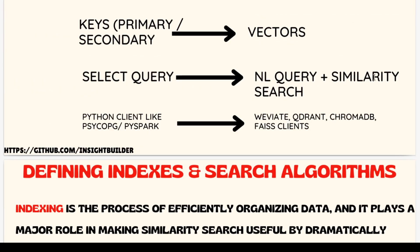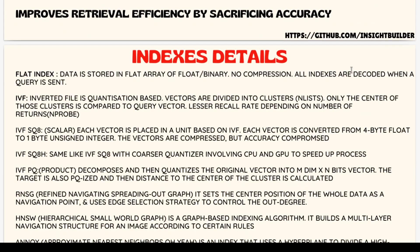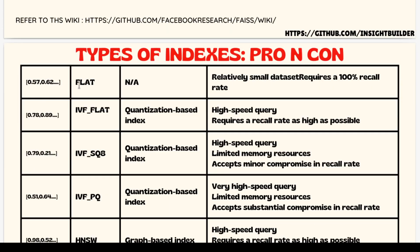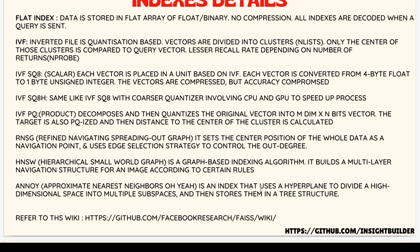The encoding process and storage can be done using multiple types of indexes. There are various types: flat index, IVF, IVF SQ8, IVF PQ, RNSG, and HNSW. All these are different ways to store the vector and retrieve data from it, including how to do similarity search and work with the distance metrics available to find similarities between multiple data points.